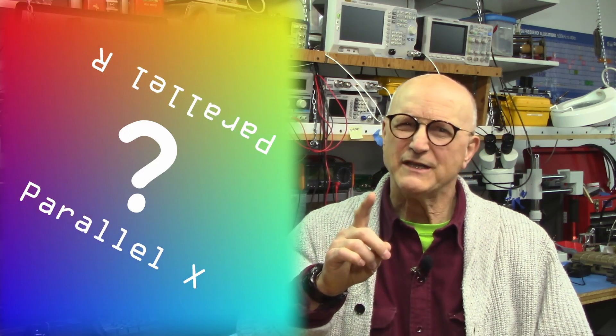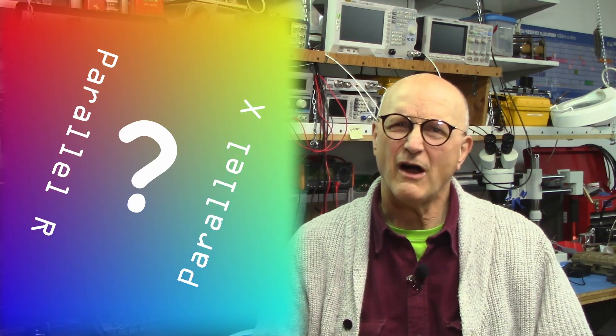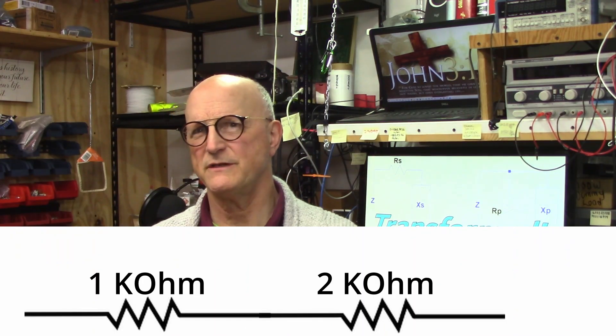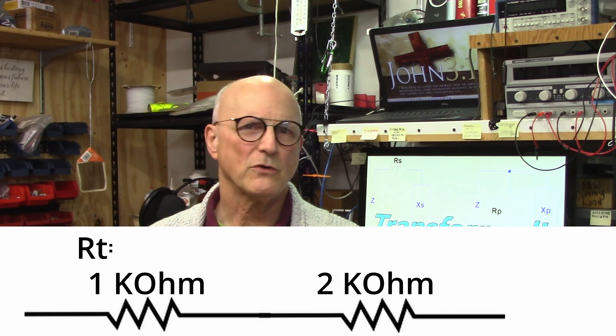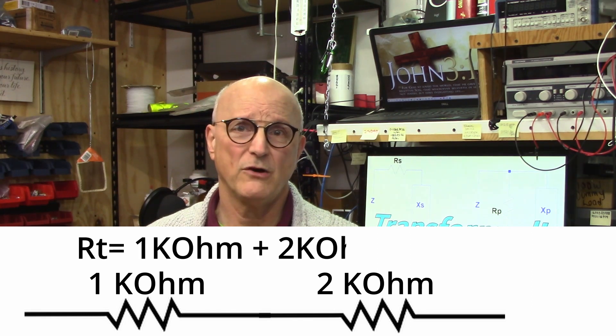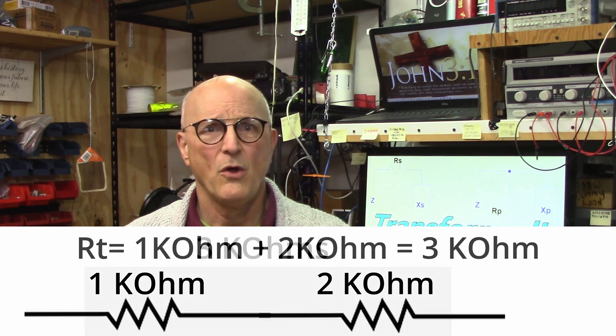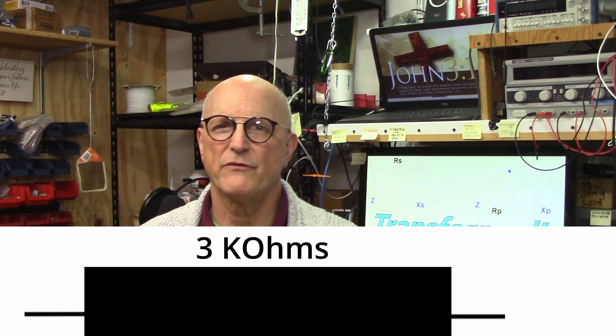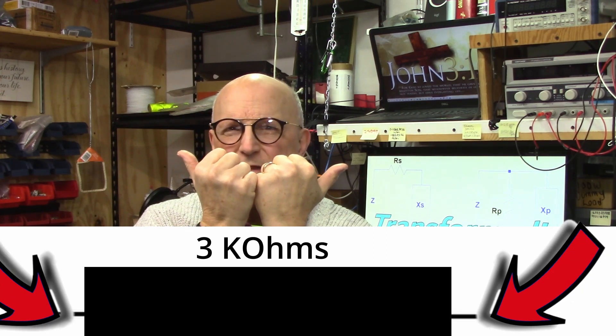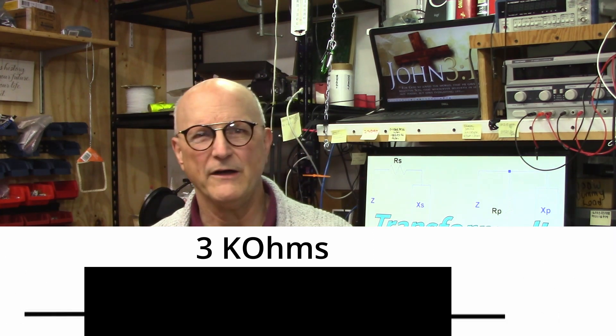The real question is what is this parallel R and parallel X stuff? Suppose we had a 1k ohm resistor and a 2k ohm resistor in series. The total equivalent resistance would be 1k ohm plus 2k ohm or 3k ohms. We are looking at this combination of resistors in a black box. We don't see the resistors. All we see is a black box and 2 leads hanging out.